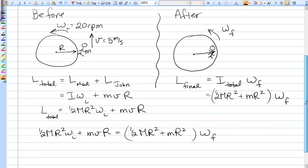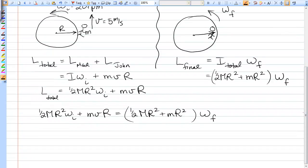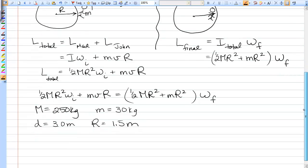And capital M is the mass of the merry-go-round, and small m is the mass of John. And those are given to us. The mass of the merry-go-round is 250 kilograms. Mass of John is just 30 kilograms. And you have to be careful about that radius. We're given the diameter is 3 meters, and so the radius is only 1.5 meters. So that's a very common mistake, is to accidentally put the diameter in instead of the radius.